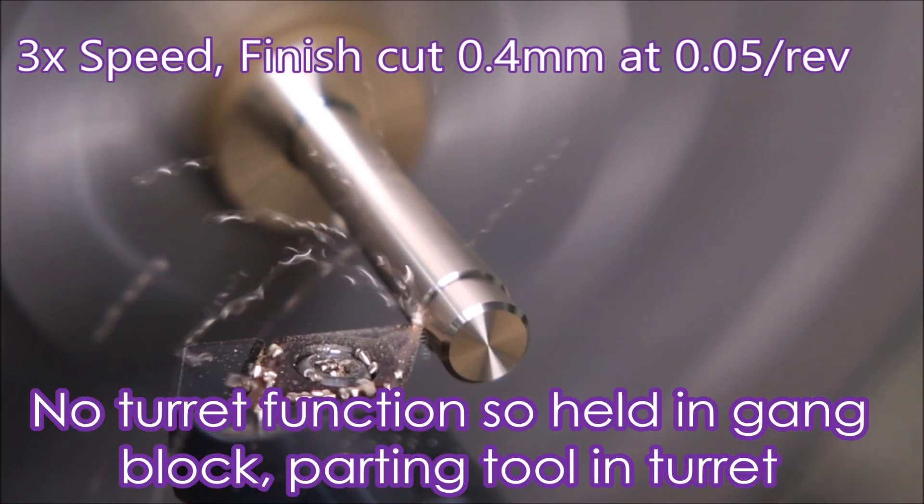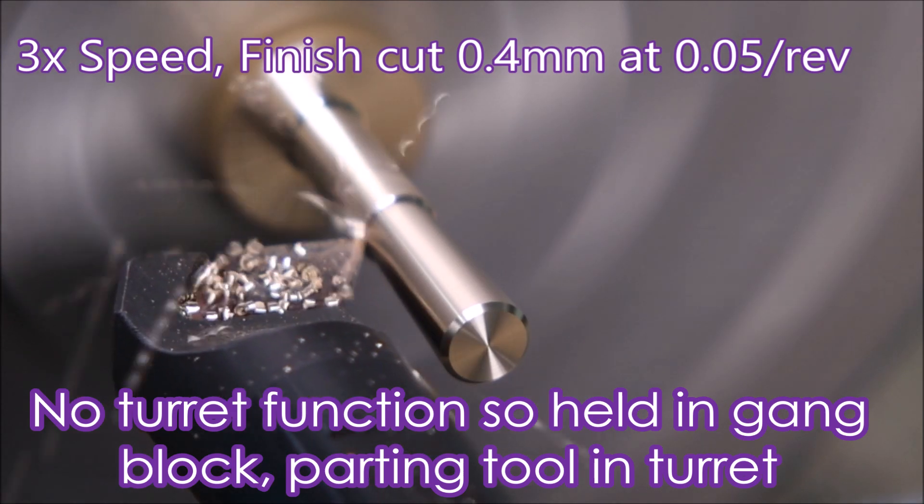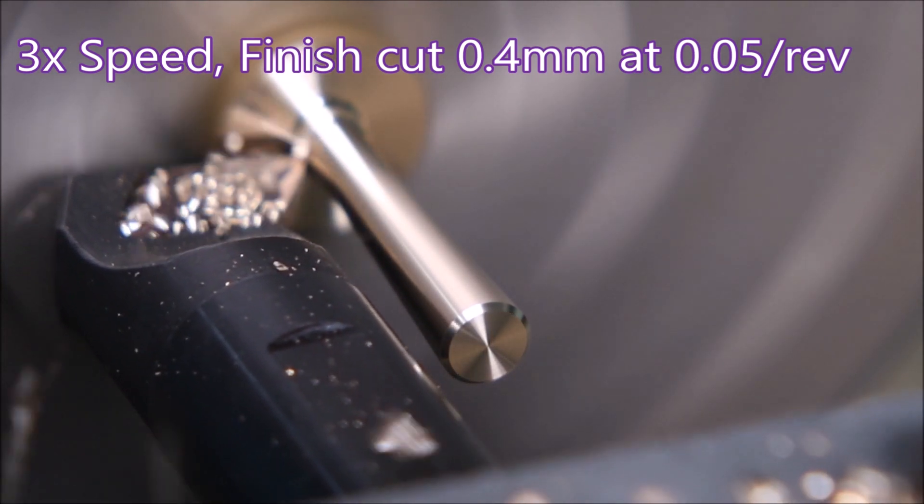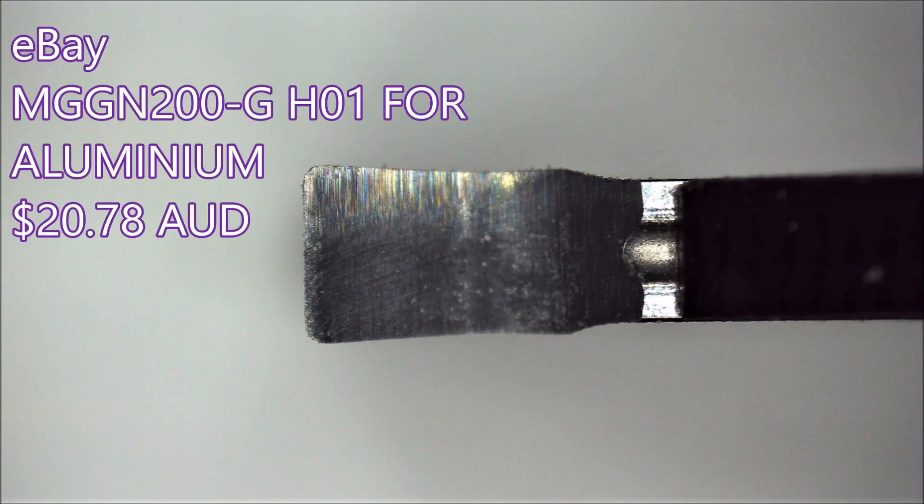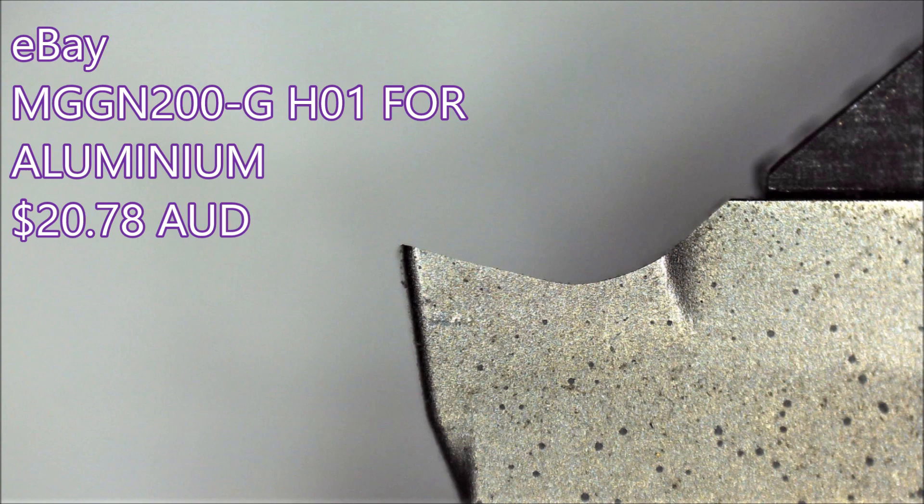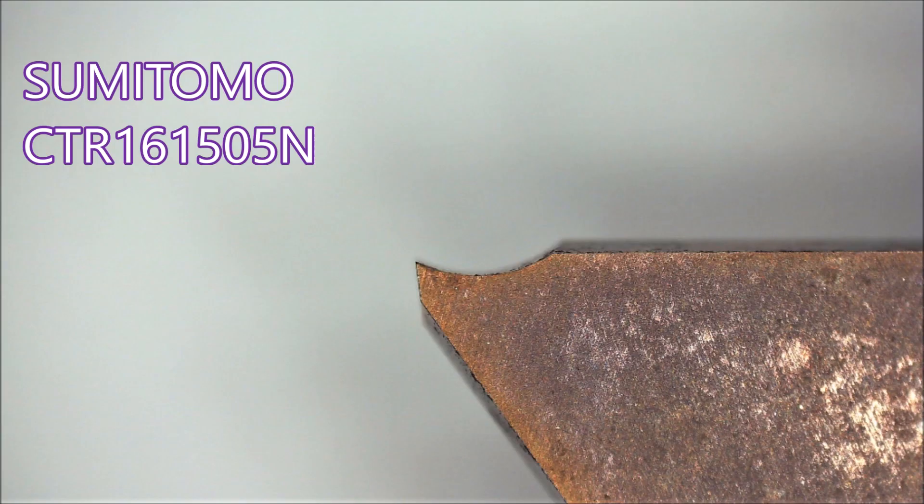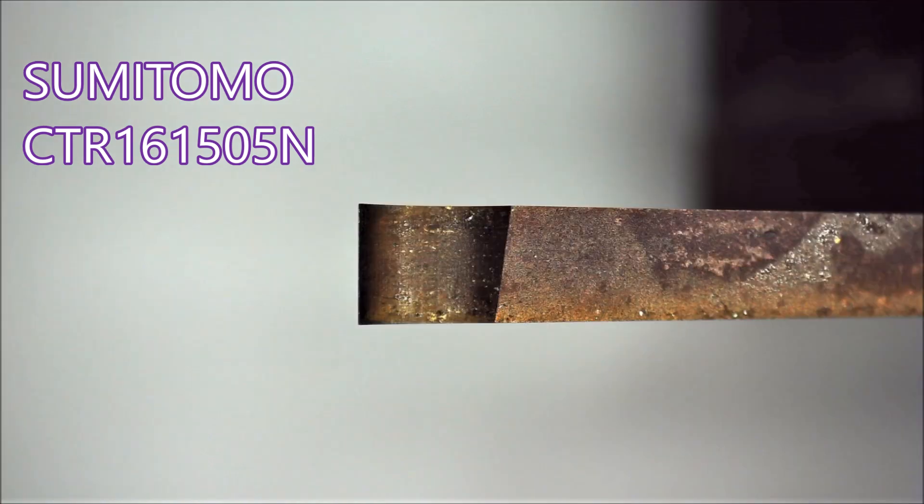Now on to some inserts I've recently purchased on eBay. I've not seen them before. They're both for aluminum, but I've never seen this shape before. I've seen that shape before. I've been using it for years. That's a Sumitomo insert. It just struck me as the new one, or one I'd only just seen, looked like it.